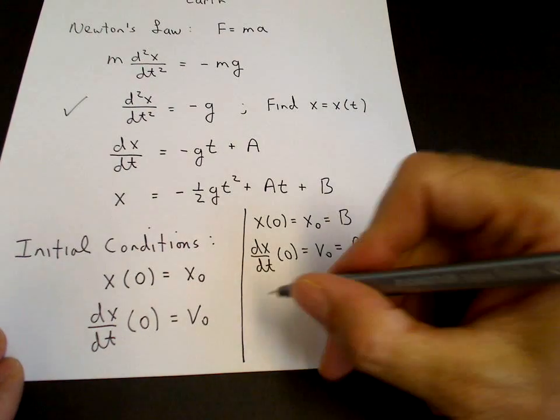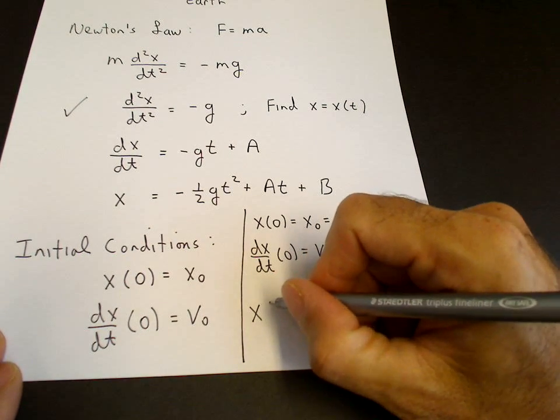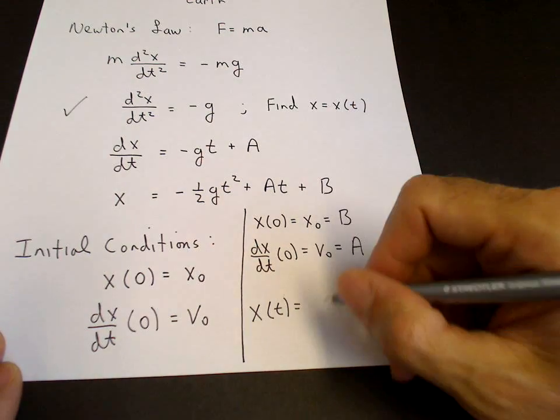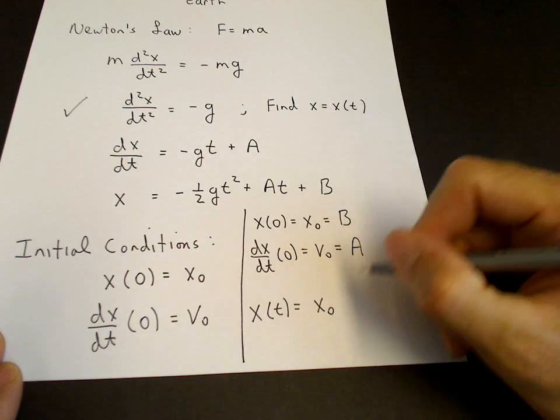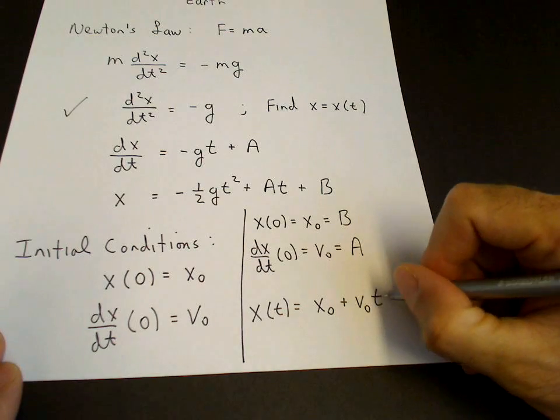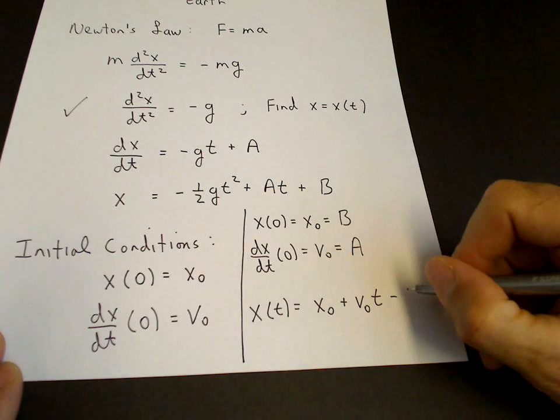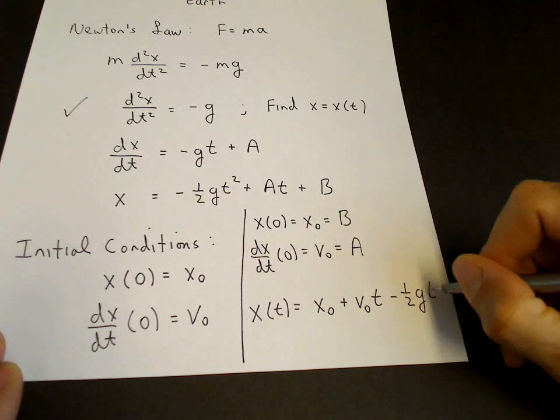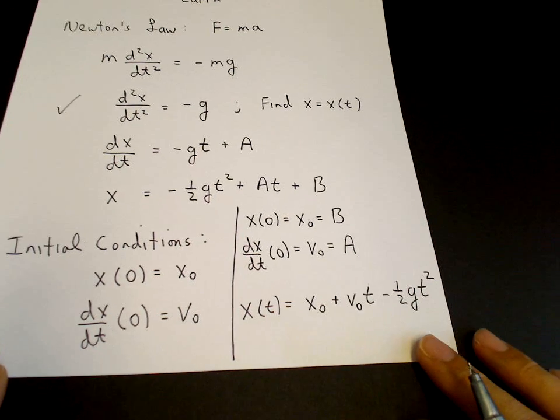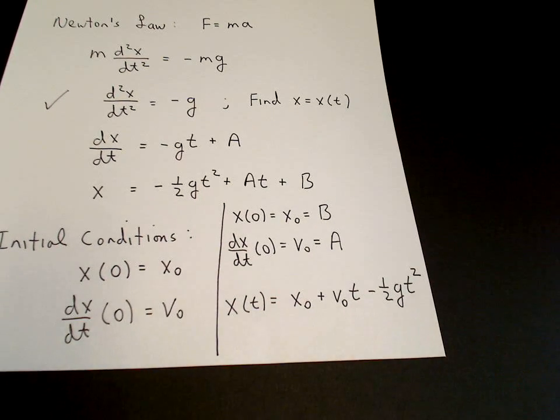So then we have our solution, well known in physics. x of t - x is a function of t - is equal to b, x0, plus a times t, v0 times t, minus 1 half g t squared. And that's the typical equation that one first learns in an introductory physics class.